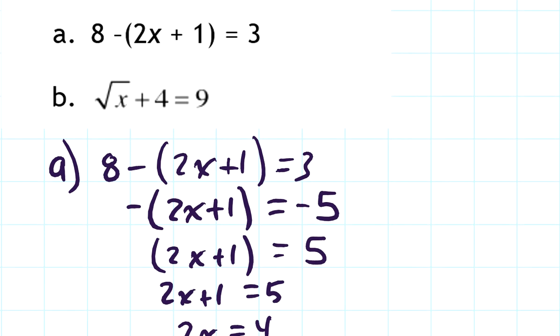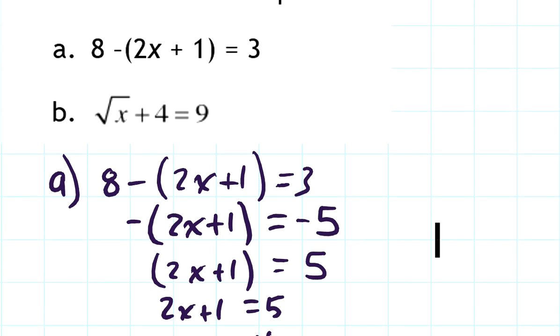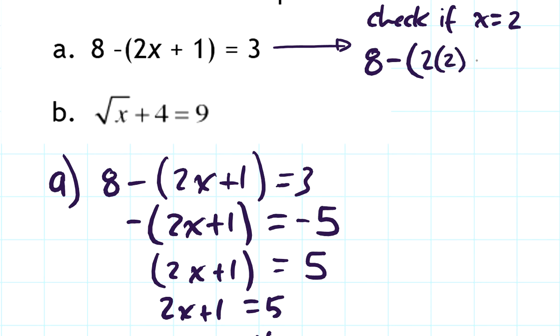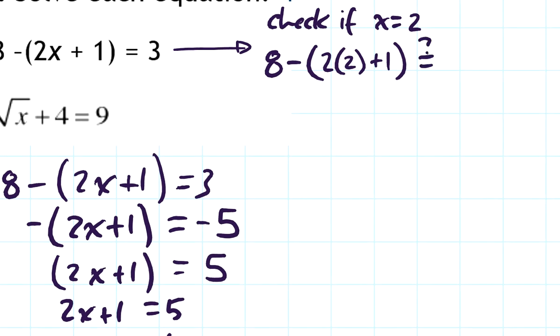Now, taking that value, it would be wise to plug it in and verify that the left and the right-hand side become the same. I'm going to check this. If x equals 2, then on one side, I have 8 minus, open parentheses, 2 times 2 plus 1. And on the other side, I'm trying to see if that's the same as 3.